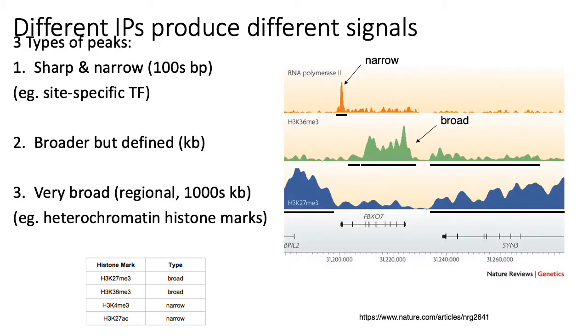I'll briefly mention the types of peaks you can see from ChIP-seq assays. When calling peaks for histone modifications, transcription factors, and other DNA-binding proteins, the characteristics of the peaks depend on the specific histone mark or transcription factor. For example, transcription factors tend to have very sharp and narrow peaks, so you can identify them very well because they're super sharp and obvious.